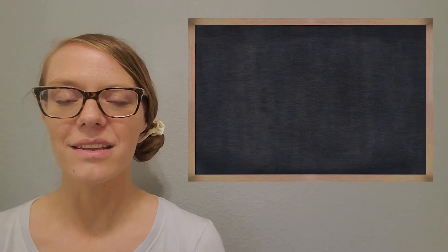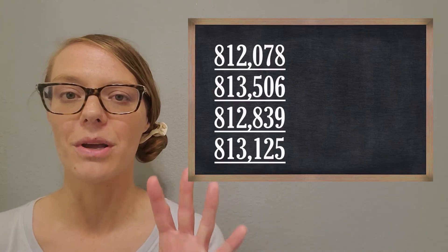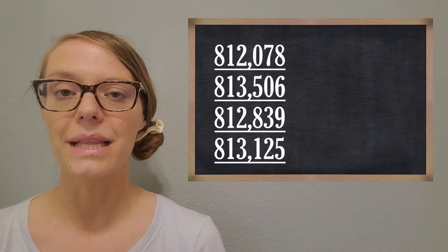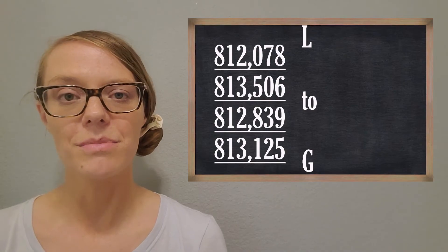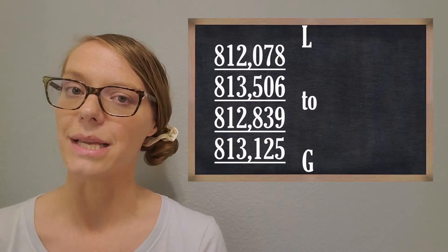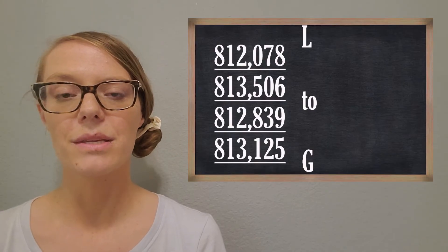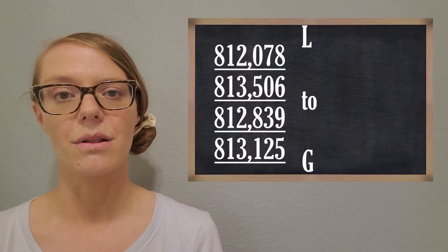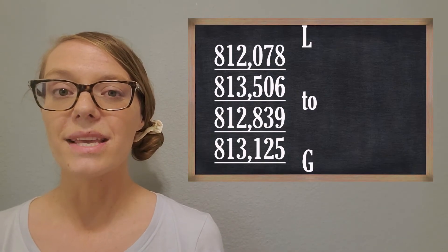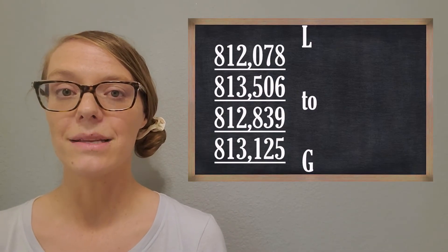Our next challenge is to take four numbers this time and put them in order from least to greatest. Sometimes I'll ask you to put something in order from greatest to least. So let's start with this easier example. I always like to start a little bit easy and then work our way up. Can you put these four numbers least to greatest?